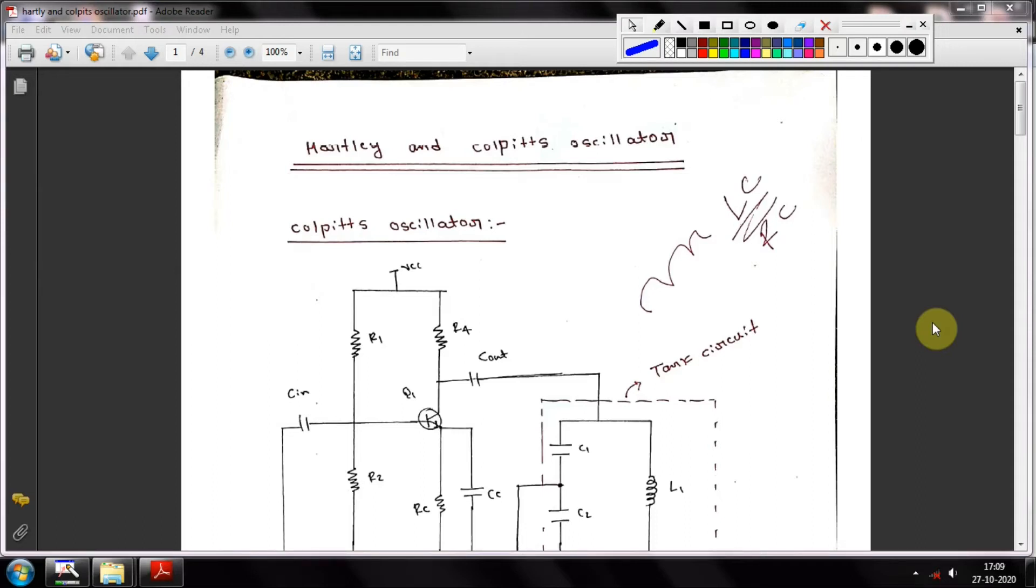In this video, we will discuss Hartley and Colpits oscillators. Previously we discussed what an oscillator is and why it's needed in electronics. Basically, an oscillator is an electronic device which produces sine, cosine, square, or sawtooth waves. Oscillators produce waveforms which act as carriers for taking information from one place to another.